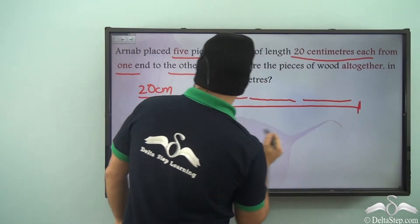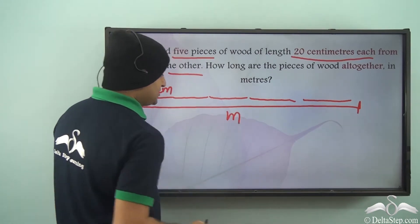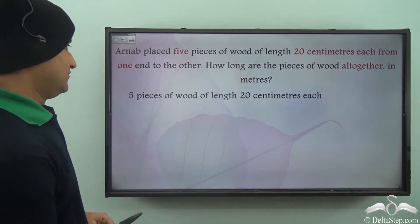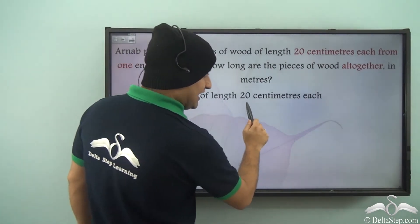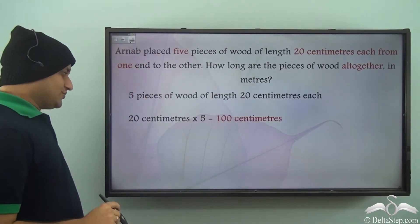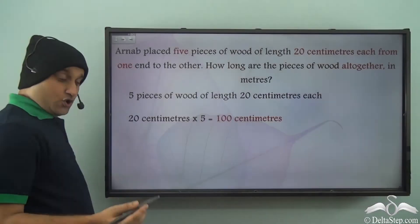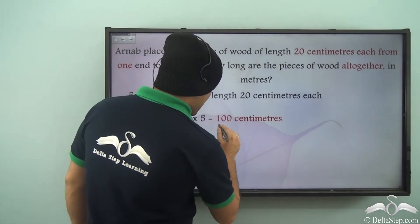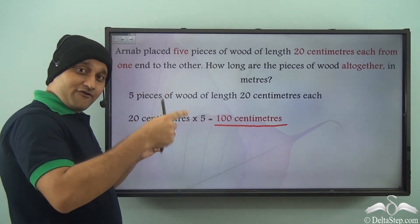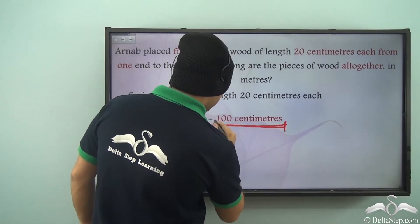We need to find the entire length in meters. We have five pieces of wood of length 20 centimeters each, so 20 centimeters into 5. The total length is 100 centimeters. If you add the length of all the sticks, the entire length is 100 centimeters.